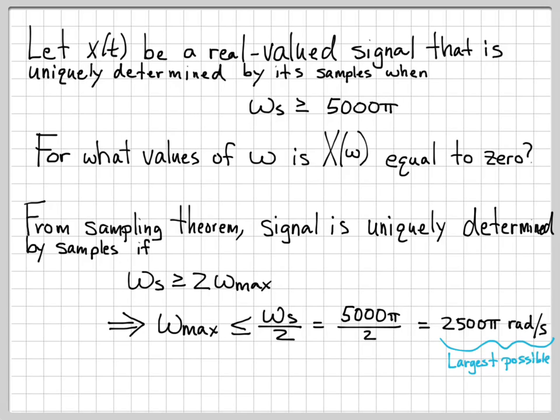So right now, we have an upper bound. We've just shown that ωmax is less than or equal to 2500π. So 2500π is the largest possible frequency that the signal x(t) can contain.